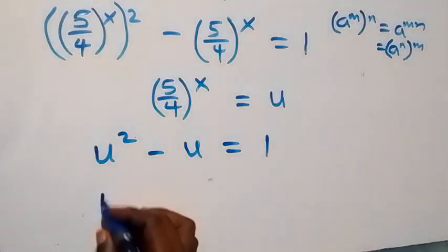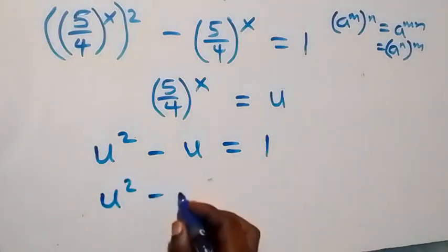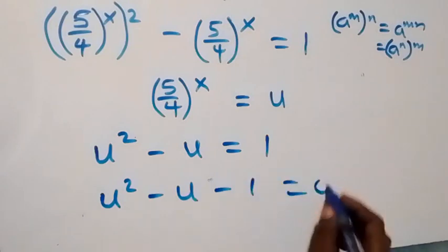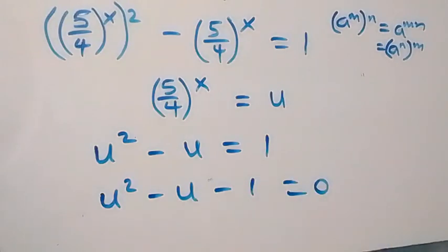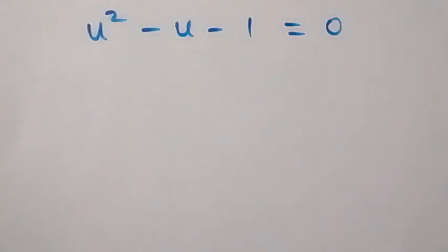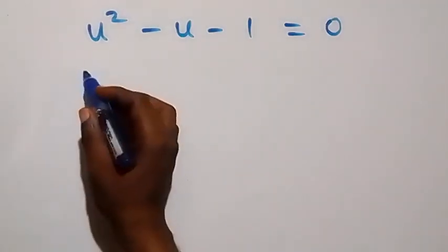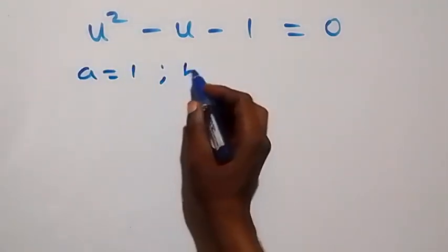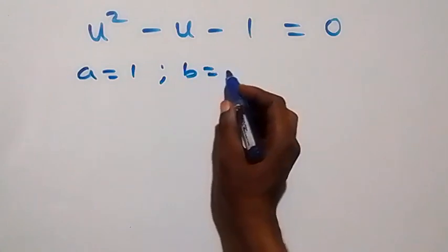Taking 1 to this side, this becomes u squared minus u minus 1 equals 0. When we solve this quadratic equation, please subscribe and give it a like — thank you. Here a equals 1, b equals minus 1, and c equals minus 1.